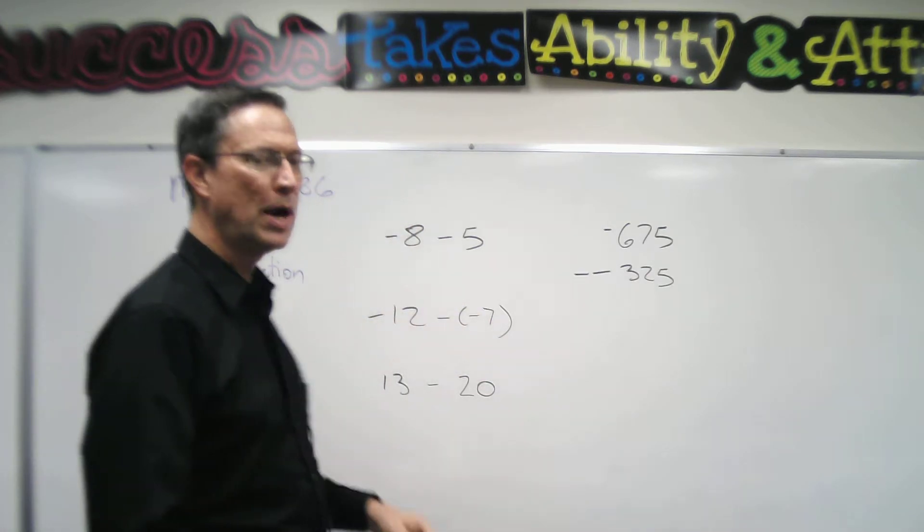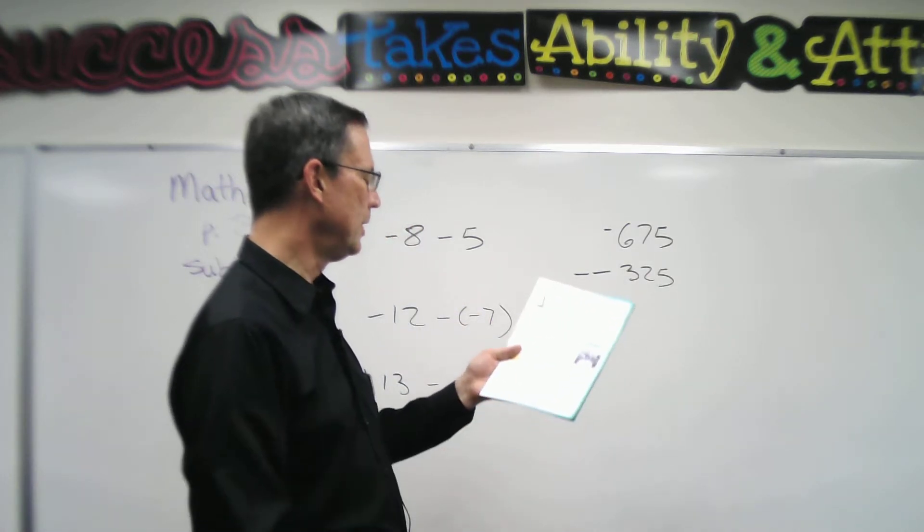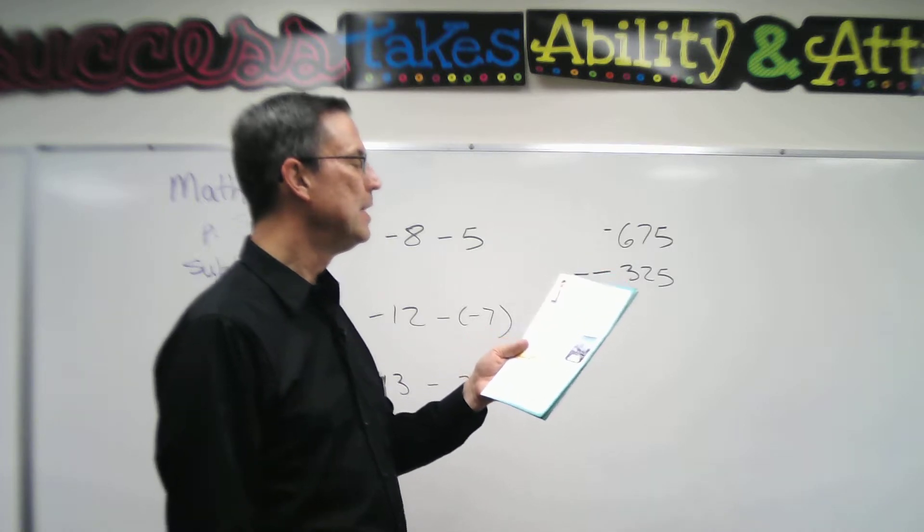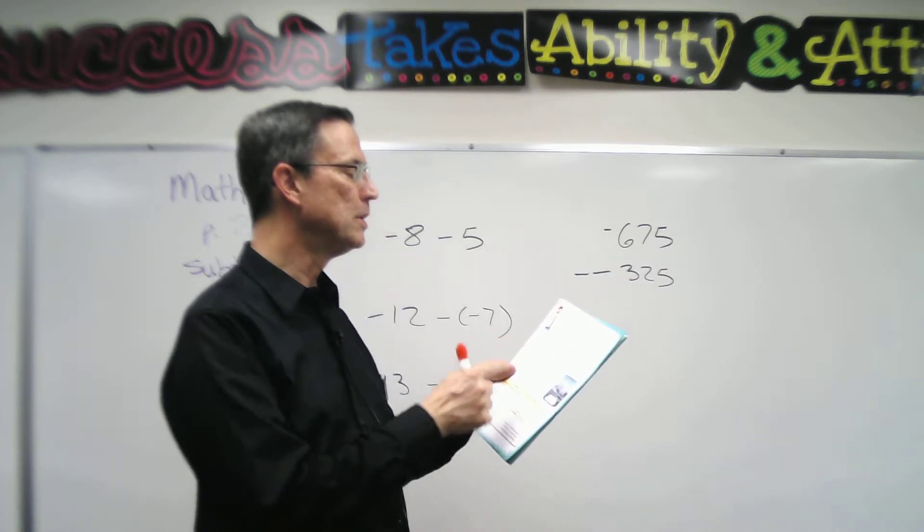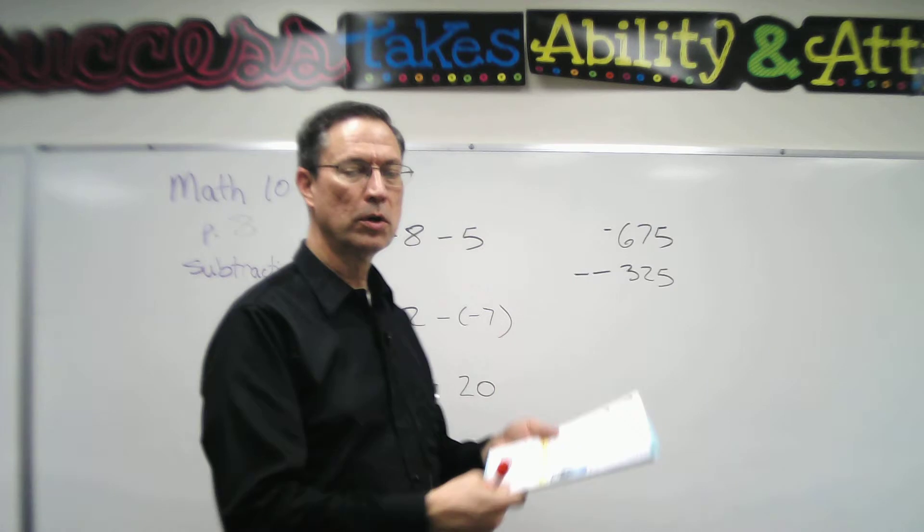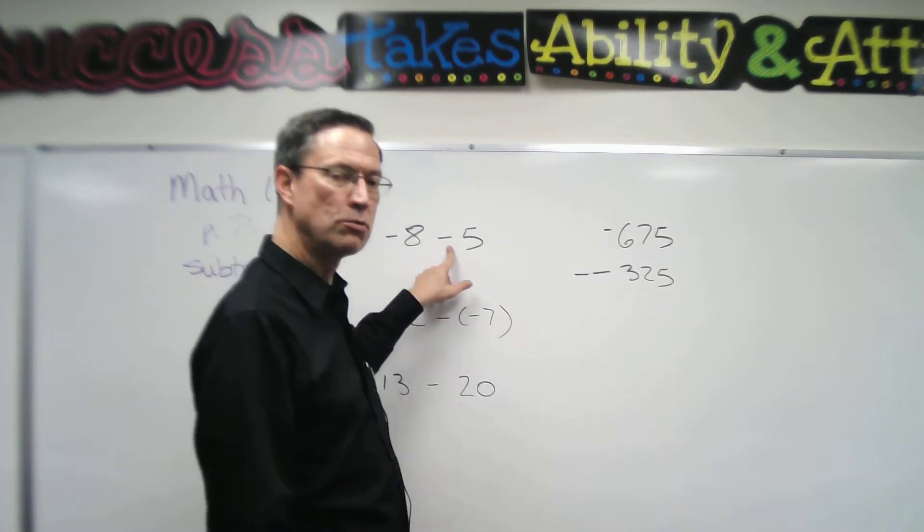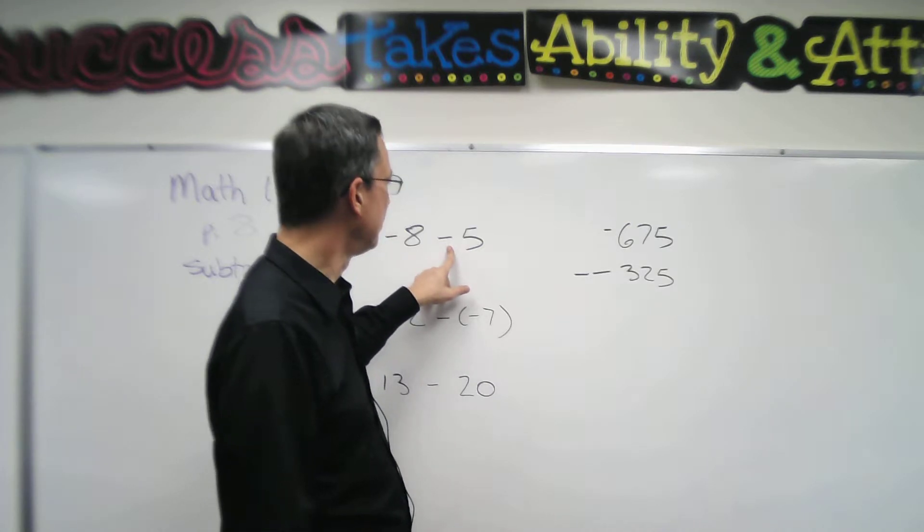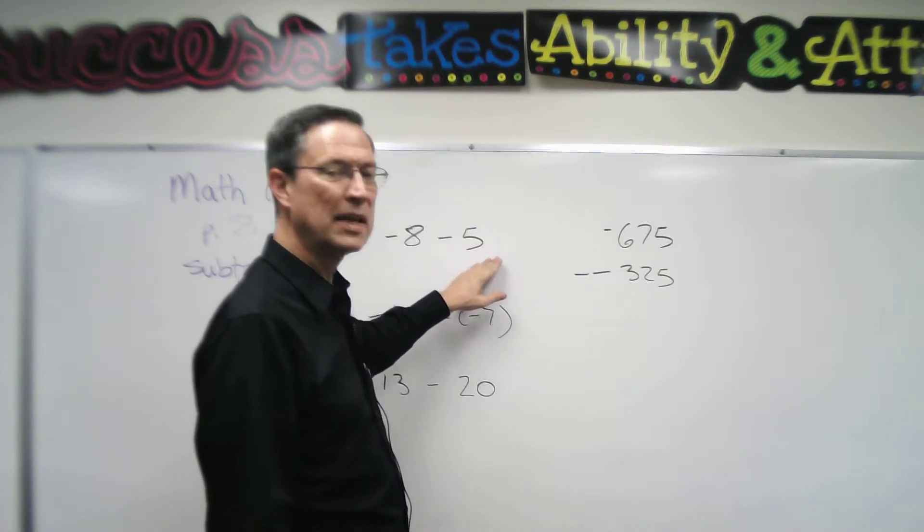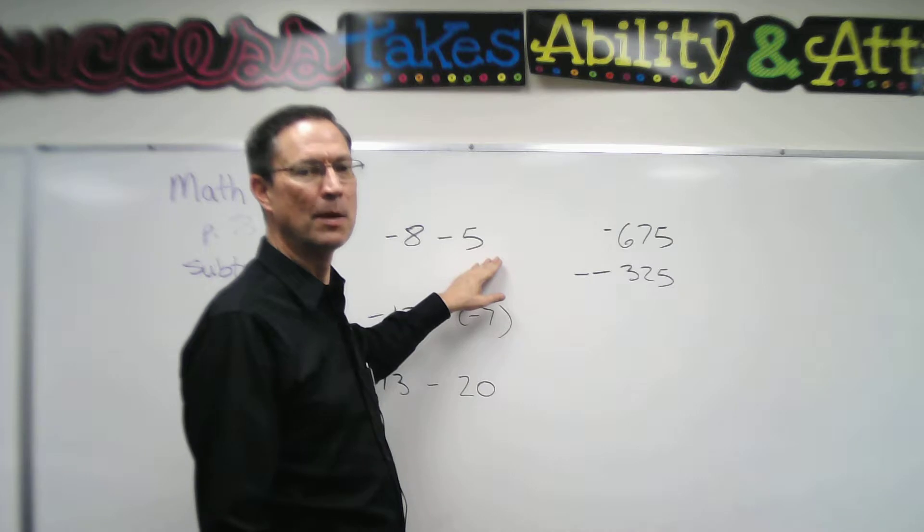Talking about subtraction, and if you read what Pudge is explaining there at the top of page 8, he's saying that when we subtract, we are going to solve it. We're going to change subtraction to addition, and then we change the second number. Now, they call it the subtrahend.